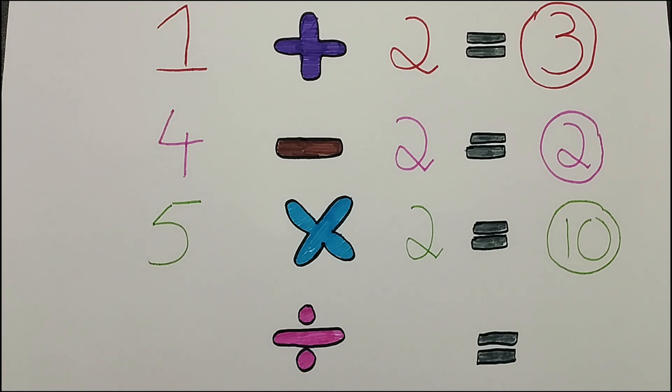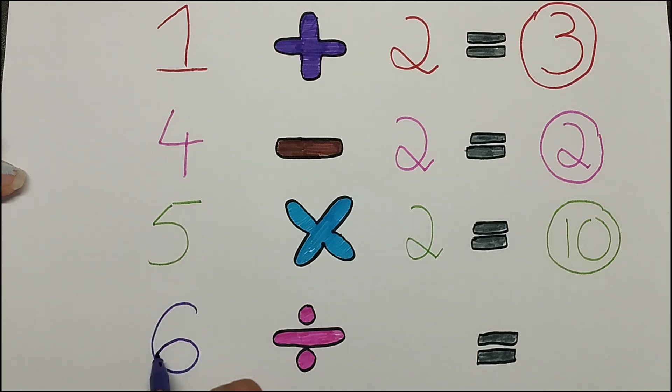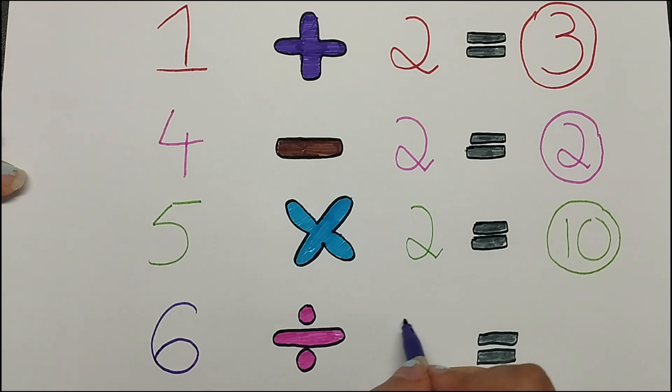Now let's do division. 6 divided by 2 is equals to 3.